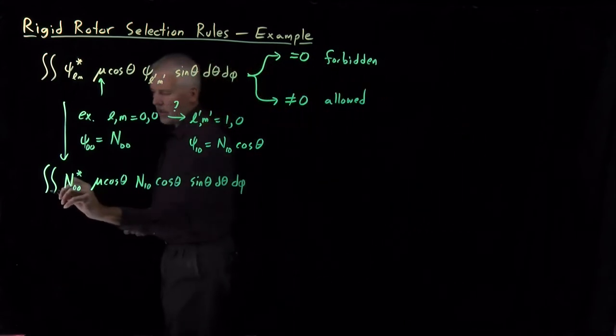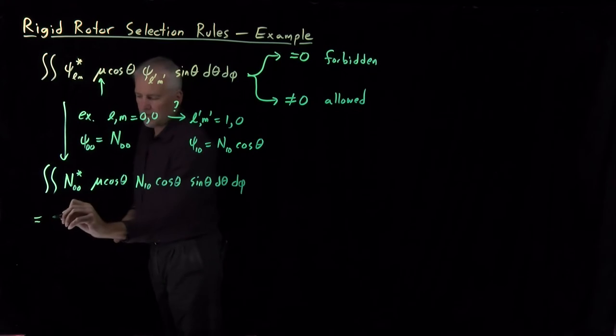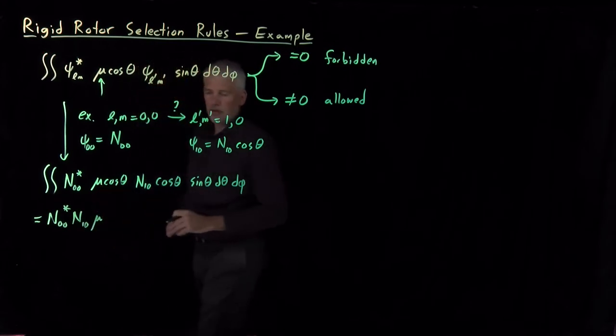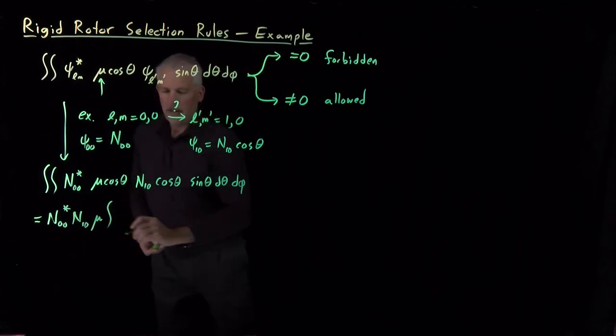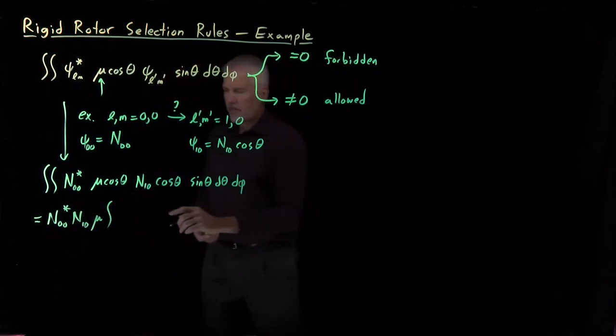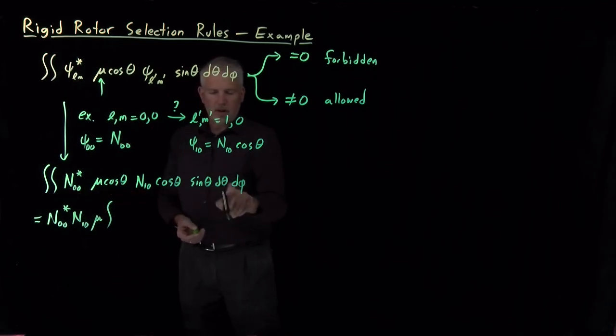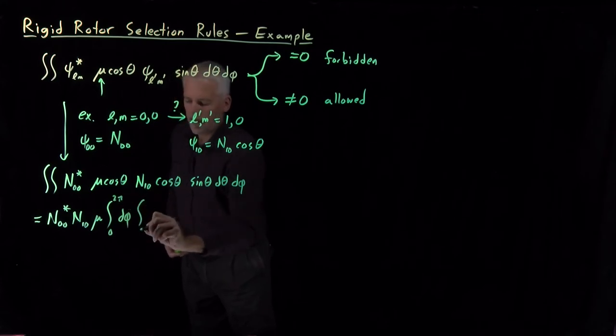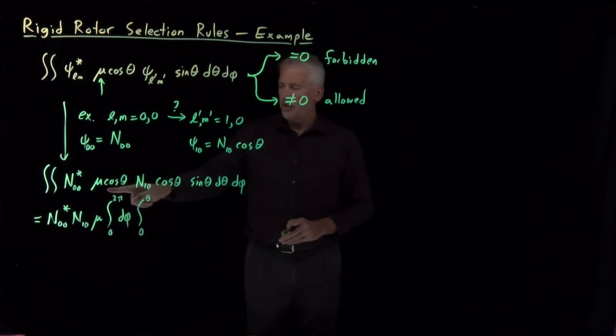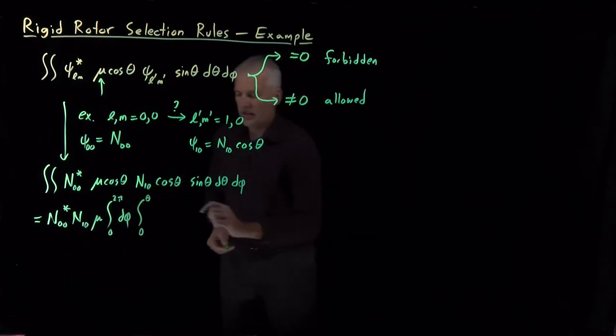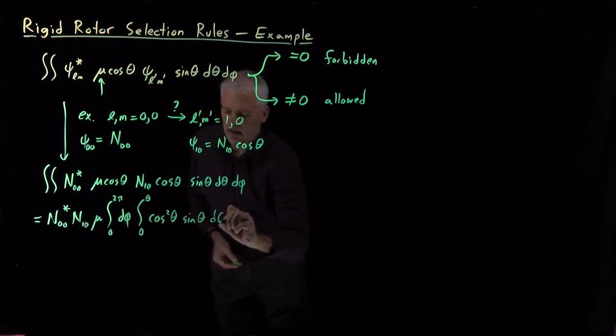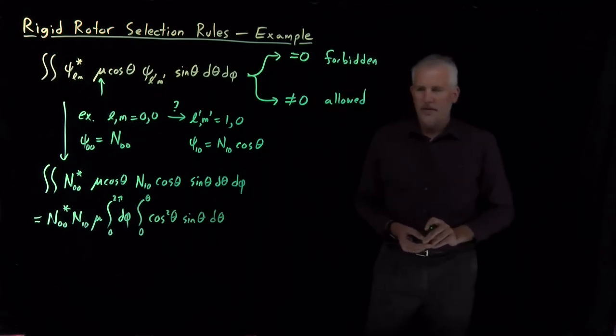We can simplify that a little bit. The constants we can pull out of the integral. So there's an N, there's another N, mu. If the dipole moment of the molecule is not changing, we can pull that out of the integral. The integral is over both theta and phi. So if I look at any of the pieces that depend on phi, there are none. So the phi integral is particularly easy. That's just the integral of d phi. The theta integral is a little more complicated. I have a cosine theta, another cosine theta, a sine theta. So that's the integral we have to perform.